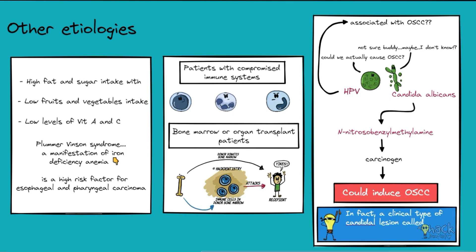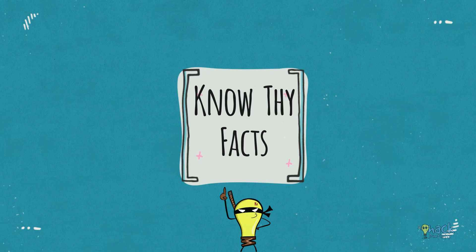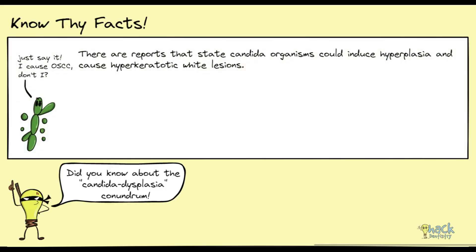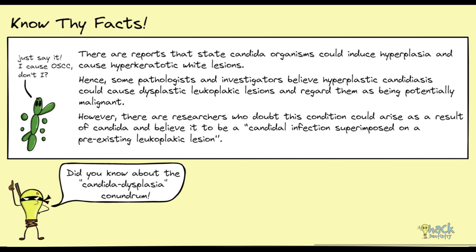A clinical type of candidal lesion called hyperplastic candidiasis is known to manifest with dysplasia histologically. There are reports that state candida organisms could induce hyperplasia and cause hyperkeratotic white lesions. Hence, some pathologists and investigators believe hyperplastic candidiasis could cause dysplastic leukoplakic lesions and regard them as being potentially malignant. However, there are researchers who doubt this and believe it to be a candidal infection superimposed on a pre-existing leukoplakic lesion.